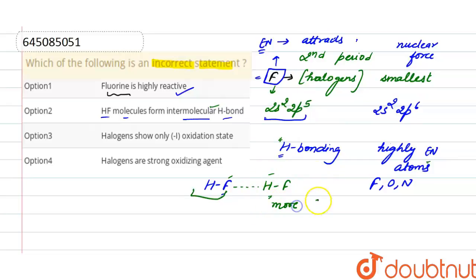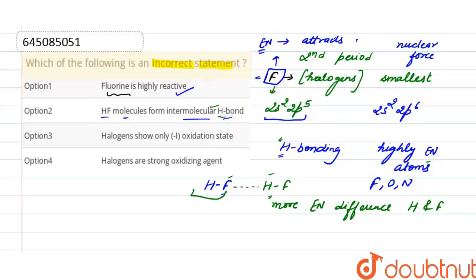Fluorine is a highly electronegative atom, and for hydrogen bonding, highly electronegative atoms are required. There is a large electronegativity difference between hydrogen and fluorine, that is why they form intermolecular hydrogen bonding. So this second statement is also correct.